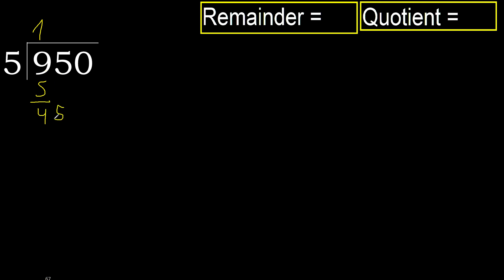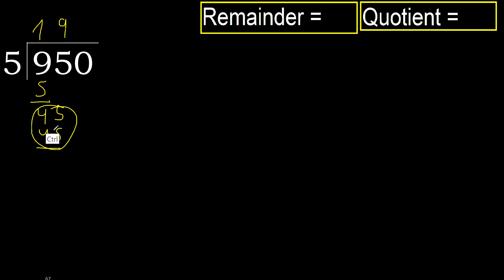Next, 45. 5 multiplied by 9 is 45, it is not greater. Subtract — subtract 0.